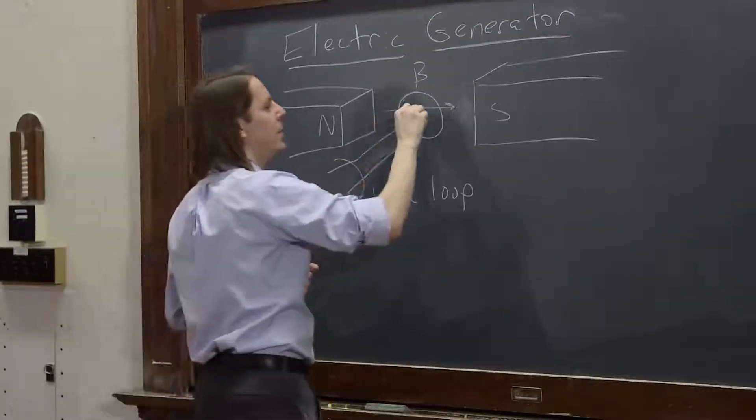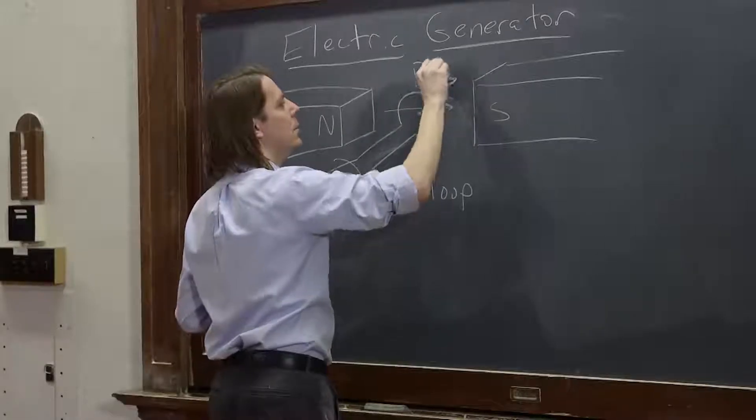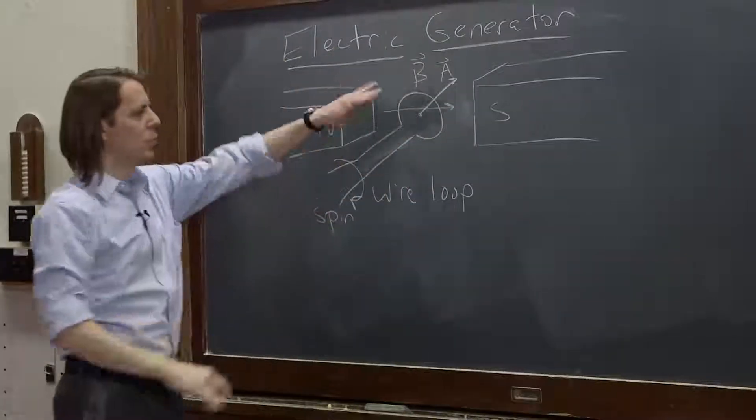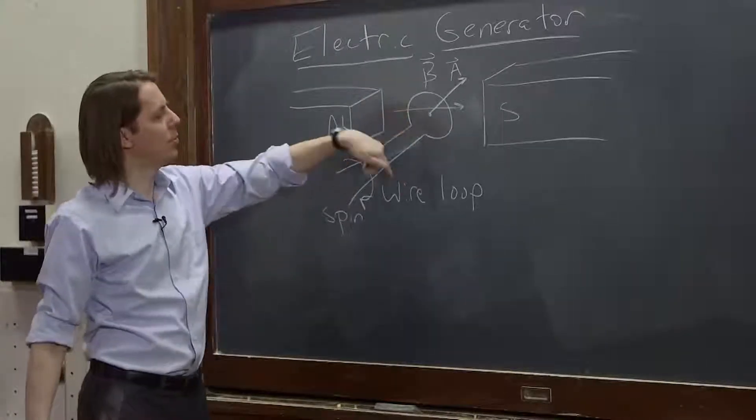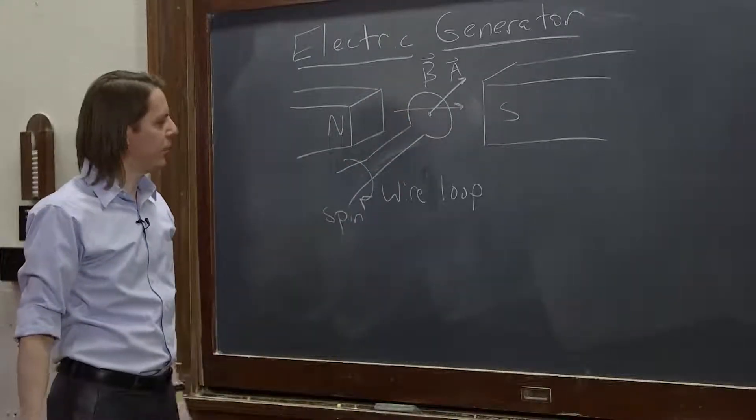So as it spins, its area vector A will rotate in between the two magnets, so the area vector A will rotate with respect to the magnetic field direction of B.